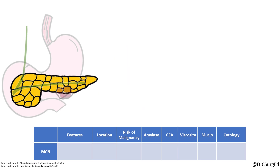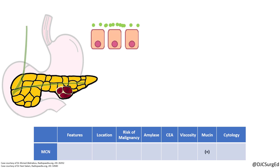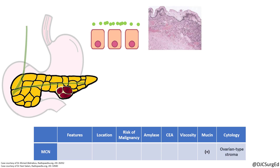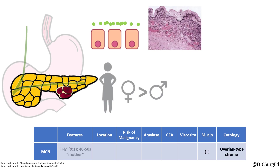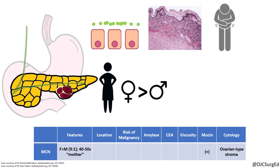Mucinous cystic neoplasms are singular, large, thick-walled cysts lined with mucin-secreting columnar epithelium with a characteristic ovarian-type stroma. There is a strong female predominance, typically during middle age, and patients may present with vague abdominal pain. These tumors are most commonly found in the body and tail of the pancreas with a 15% risk of malignancy.